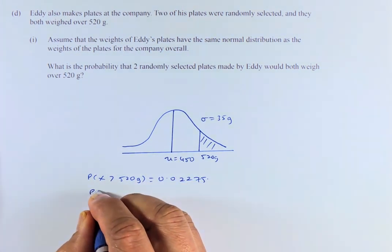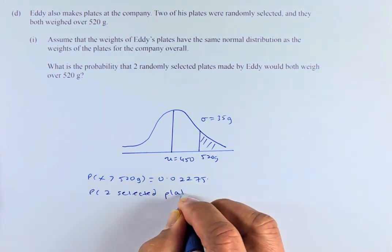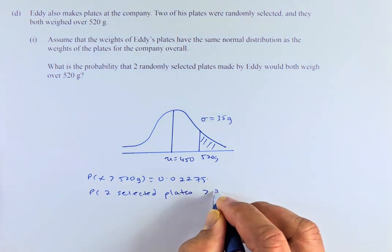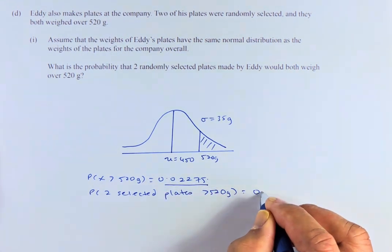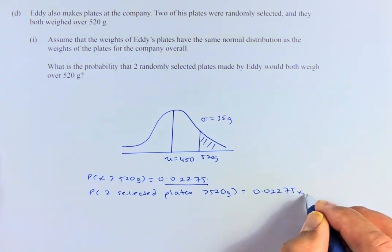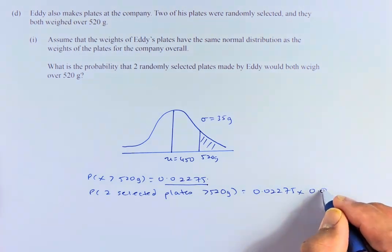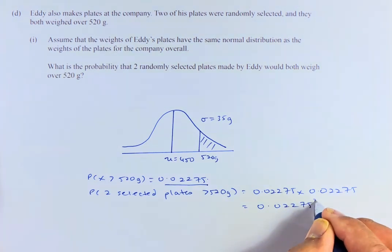So to get the probability of two selected plates that is more than 520 grams, you just take this number here, 0.02275, that's the first plate, and multiply by that number again, 0.02275, or 0.02275 squared.